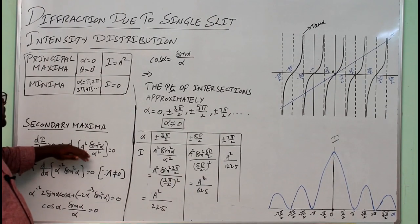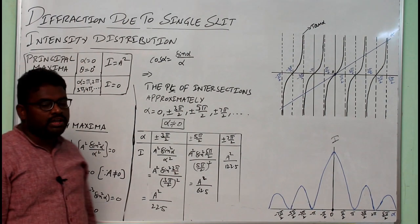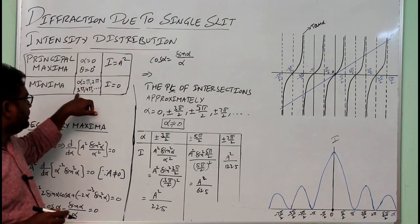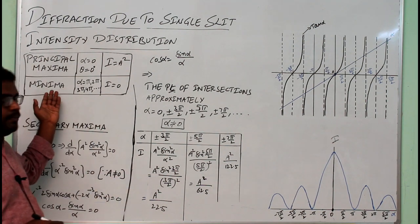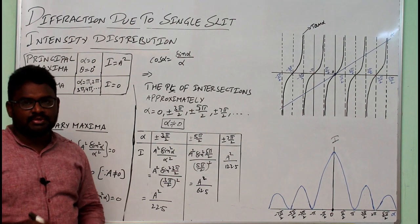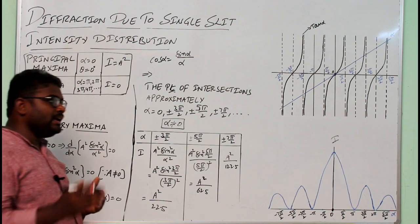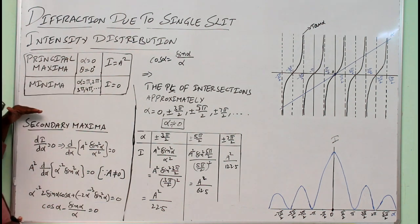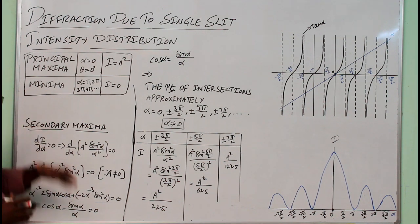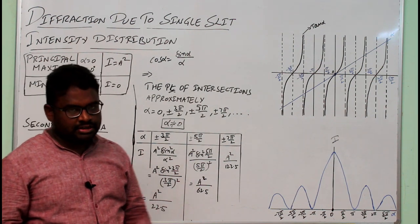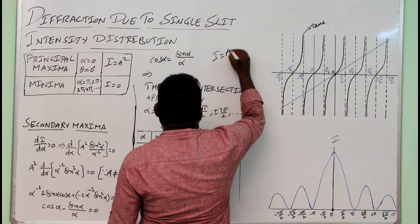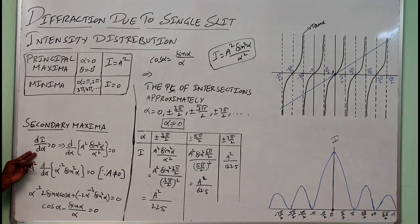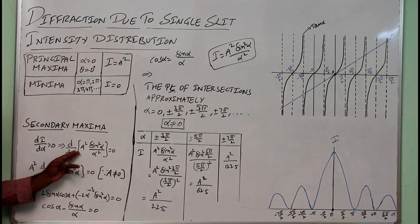We already derived the principal maxima expression: light rays traveling without deviation focus at the center, giving principal maxima. Light rays deviating by π, 2π, 3π, 4π give minima. Between minimas there are secondary maximas. To find the secondary maxima condition, differentiate the intensity with respect to α and set it to zero: dI/dα = 0. With I = A²·sin²(α)/α².